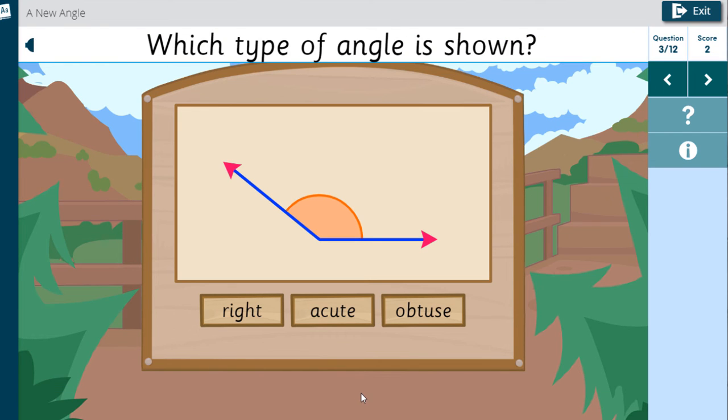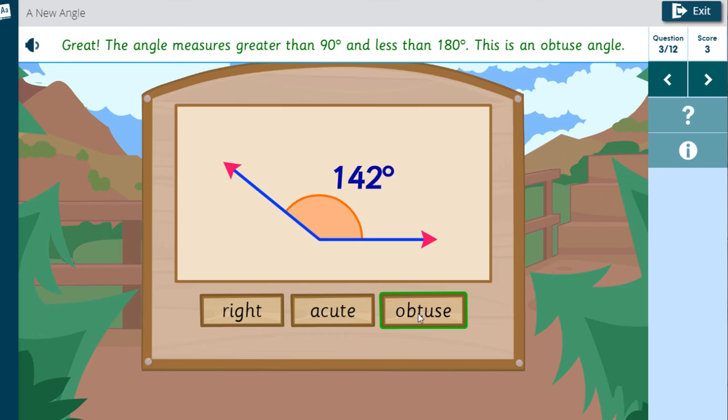Which type of angle is shown? Great. The angle measures greater than 90 degrees and less than 180 degrees. This is an obtuse angle.